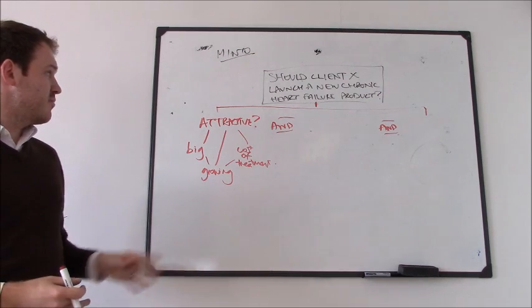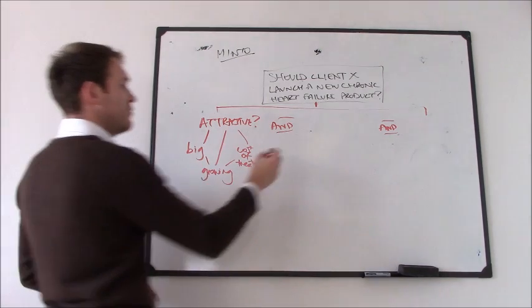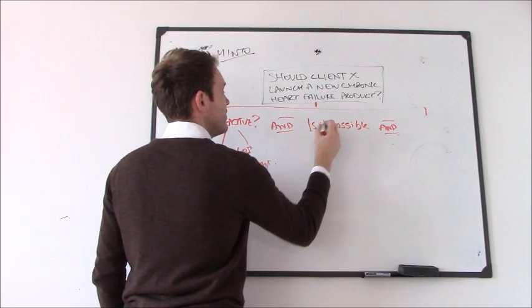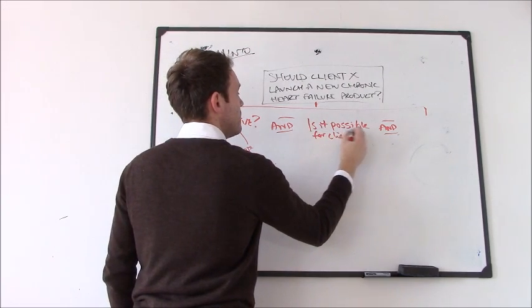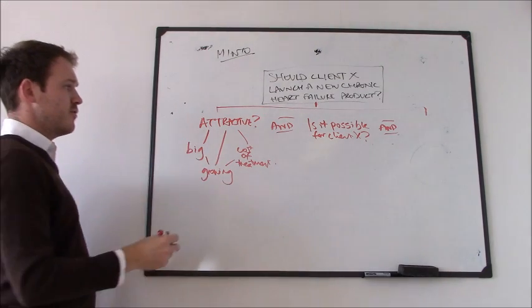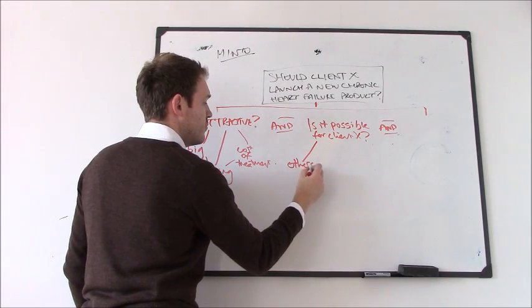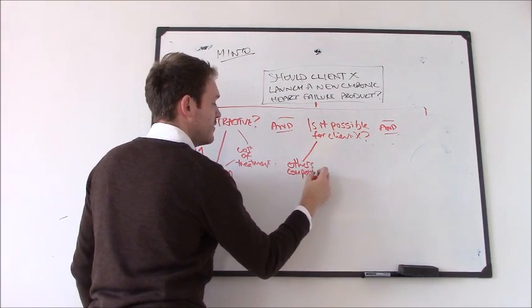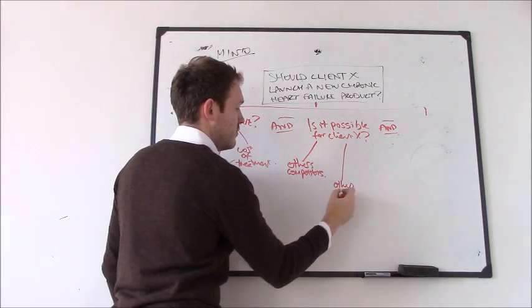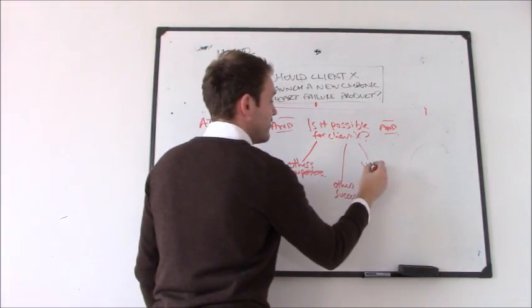So immediately we have three things that we can be looking at here to work out and gauge the attractiveness. If that's the case and we say, yeah, you know, our initial look says that there might be something here, we then go to the next level. Is it possible for ClientX to actually make strides and get into this market? So what might we want to look at here? Well, we already know that it's attractive. So surely other competitors might have also tried to move in as well. If so, what have they done? And have they done it successfully? We then might want to look at any unmet needs that might be left for us to try and get into.